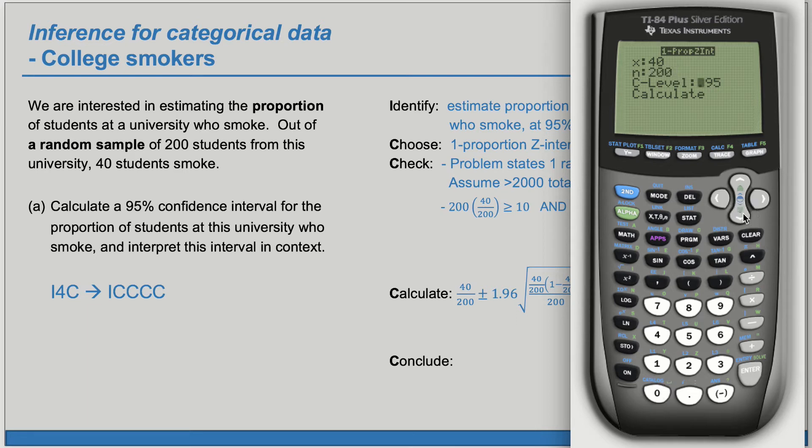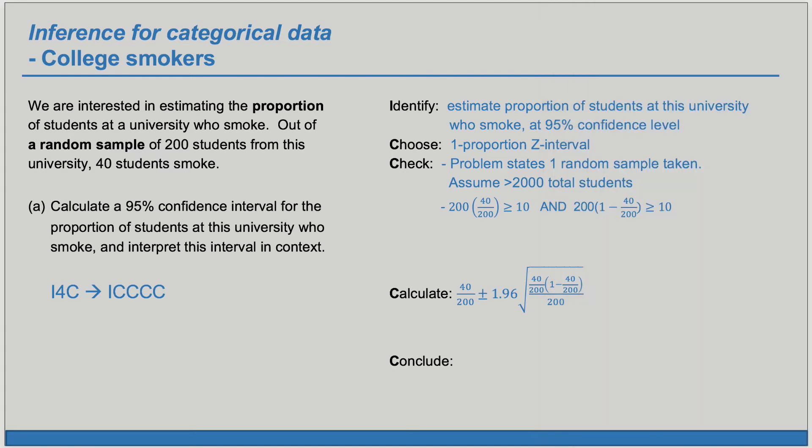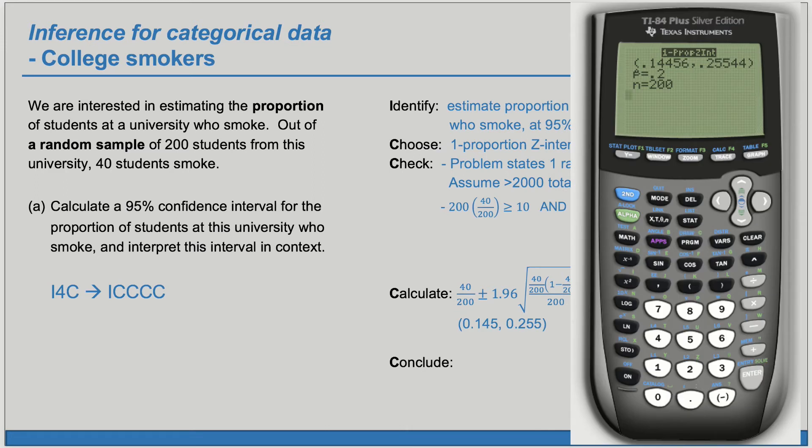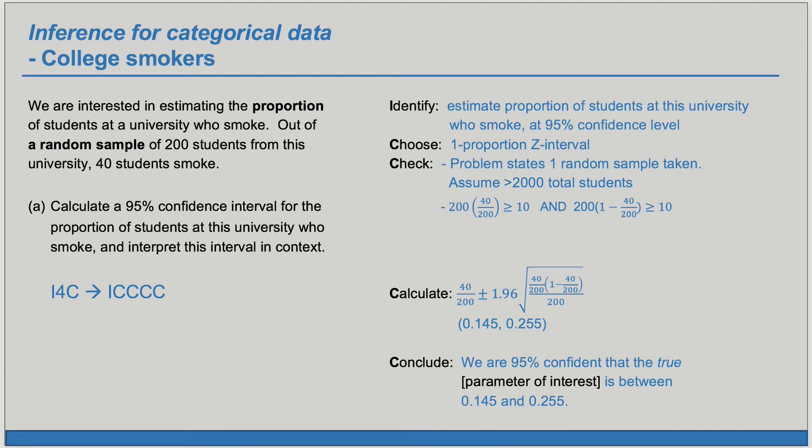Our confidence level is 0.95 and so we can calculate. This gives us the lower and upper bound to our confidence interval. We are 95 percent confident that the true parameter of interest is between our lower and upper bound. The parameter of interest is the proportion of students at this university who smoke. So we are 95 percent confident that the true proportion of students at this university who smoke is between 0.145 and 0.255, or between 14.5 and 25.5 percent.